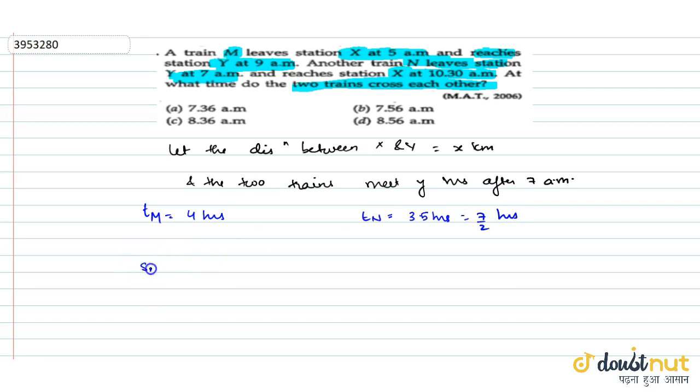So, speed of m will be x/4 km per hour, and speed of n will be x divided by 7/2, that is 2x/7 km per hour. These are both speeds.